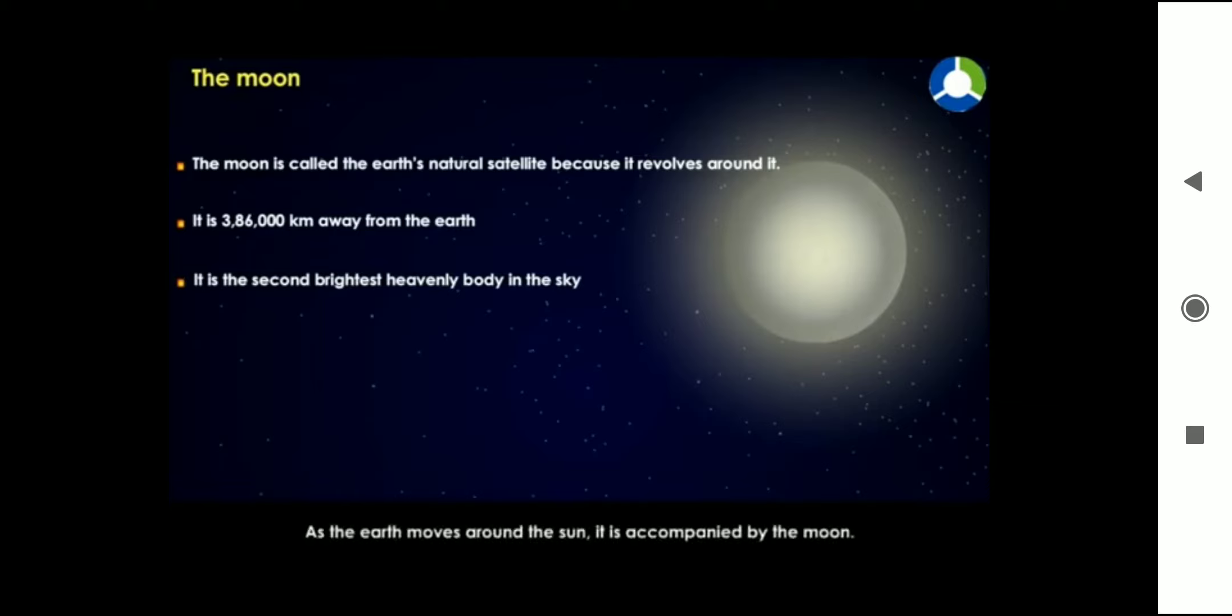As the Earth moves around the Sun, it is accompanied by the moon. The moon does not have light of its own. It shines because of sunlight falling on its surface. Moon reflects the light of the Sun.